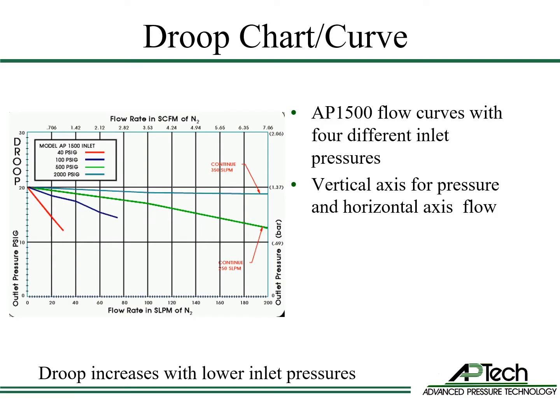This is a typical droop curve, or flow curve. At the top, it indicates the gas used — in this case, nitrogen. Flow curves plot outlet pressure on the vertical axis and flow on the horizontal axis. The bottom left of the chart is zero flow and zero pressure. This AP1500 regulator flow curve demonstrates the impact of four different inlet pressures with a 20 psi fixed zero-flow outlet pressure setting.